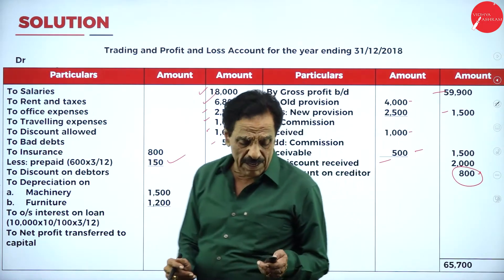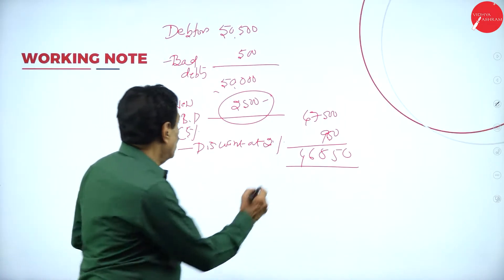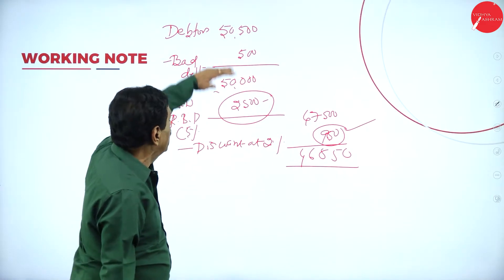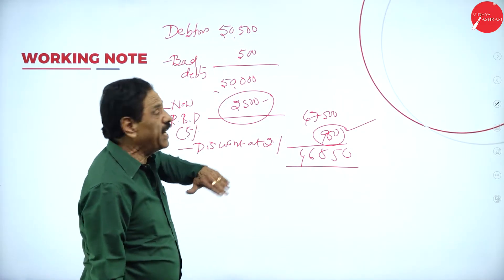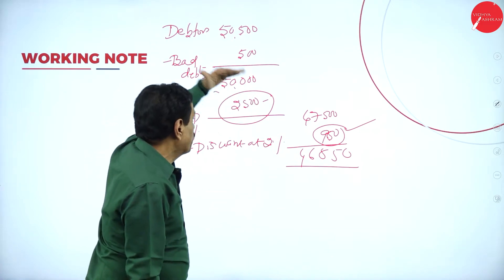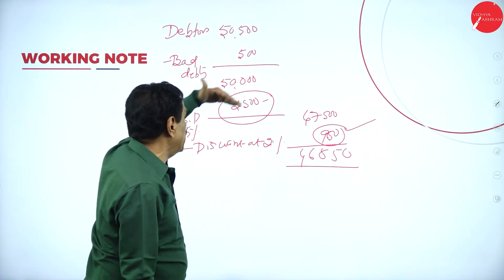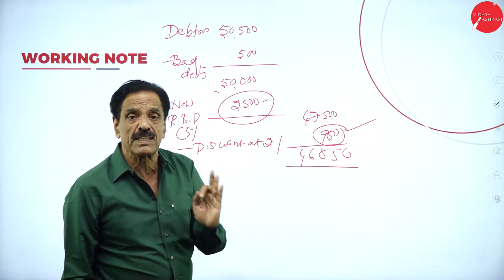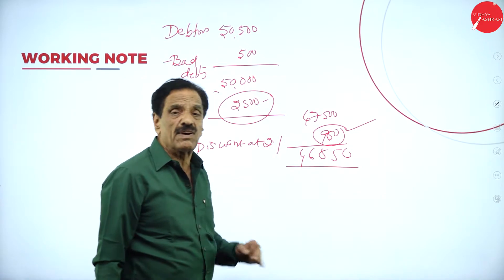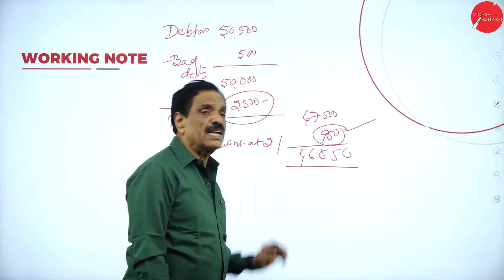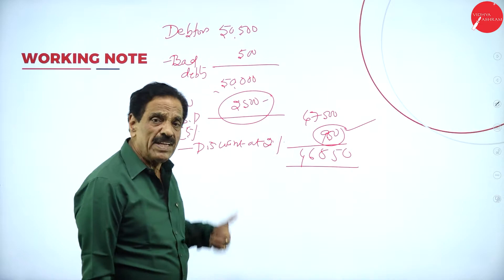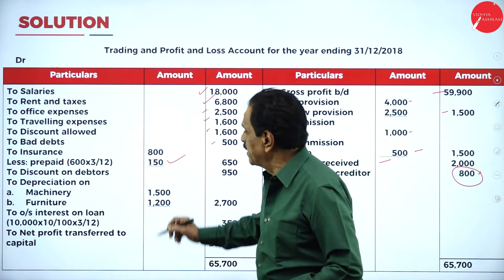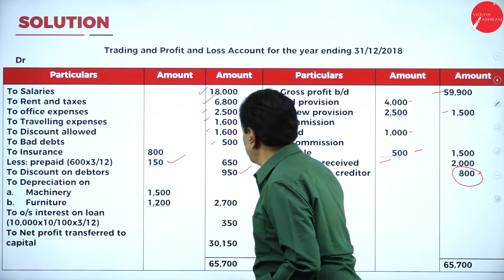Discount on debtor — we have calculated this in the working note. Debtors 50,500, minus irrecoverable bad debt 500 = 50,000; minus new RBD 5% = 2,500; balance 47,500 from the customer; 2% discount allowed on 47,500 = 950. That 950 is an expense shown on the debit side of the P&L account.